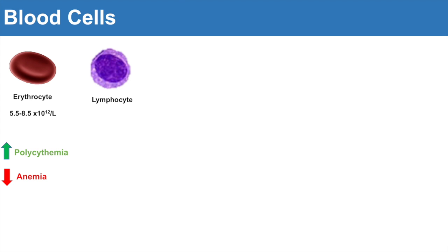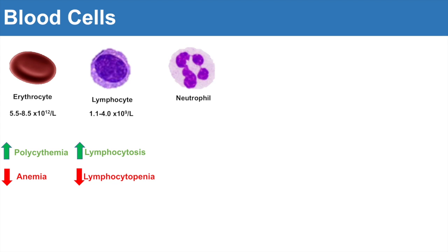The next one is lymphocytes, a type of white blood cell. They are typically at 1.1 to 4 times 10 to the 9th per liter. Anything higher than this would be lymphocytosis, as you would see in a viral infection, and anything less would be lymphocytopenia. The next one is neutrophils, the most abundant of the white blood cells, with a typical reference range of 2 to 7.5 times 10 to the 9th per liter. Anything higher would be neutrophilia, as seen in a bacterial infection, and anything lower would be neutropenia.